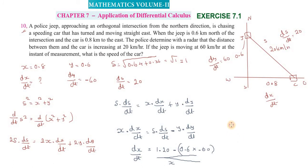dx/dt = (20 - (-36)) / 0.8. So 20 plus 36 divided by 0.8. 20 plus 36 is 56 divided by 0.8, which equals 70 kilometer per hour. Thank you students.